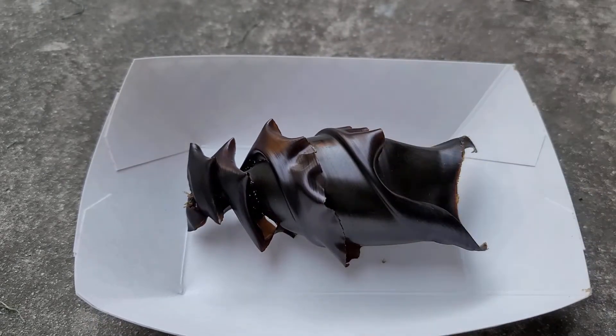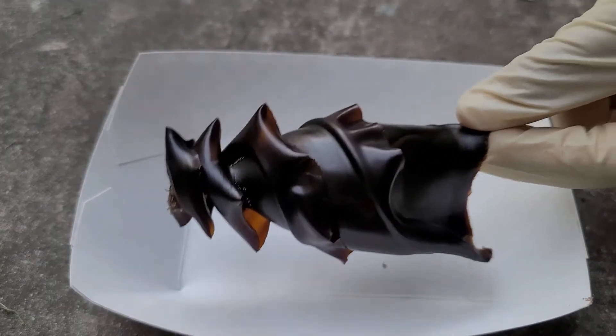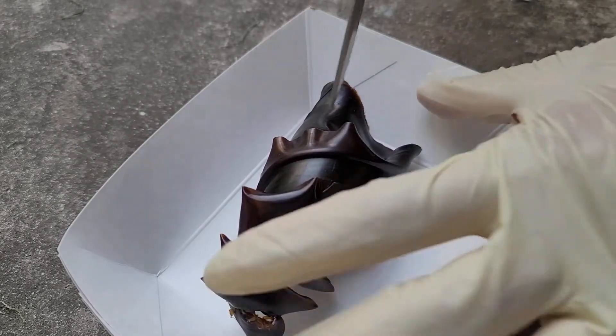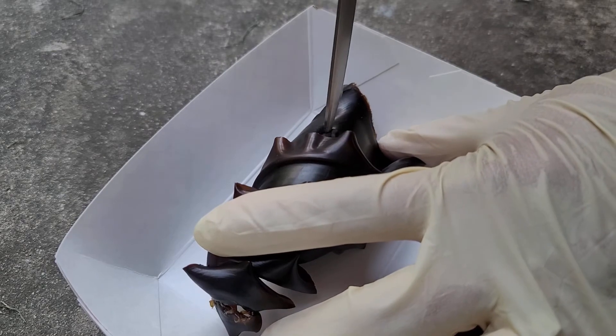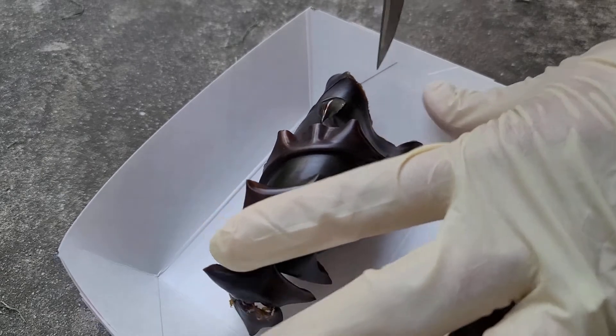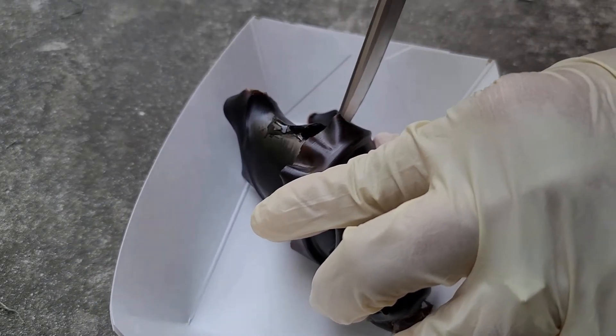We're going to open up this shark egg case and see what is inside. Even though it looks like a rock, it's actually soft because it's essentially made out of collagen, and you can see the liquid inside right there.